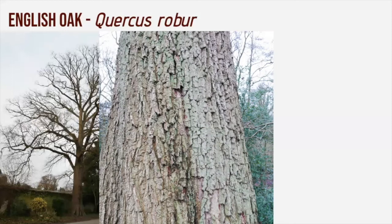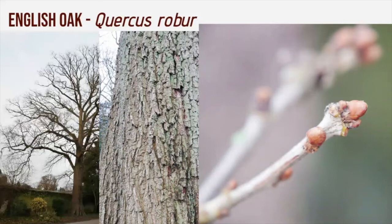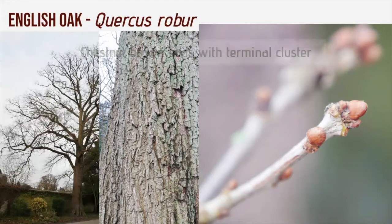The bark is deeply fissured and ridged, as you can see in this image. The buds have overlapping scales and a lovely rich chestnut colour, and they're also clustered. Clustering is when the lateral buds develop as short shoots and then grow the leaves or flowers at the same point every year. Remember: chestnut brown buds with terminal cluster.